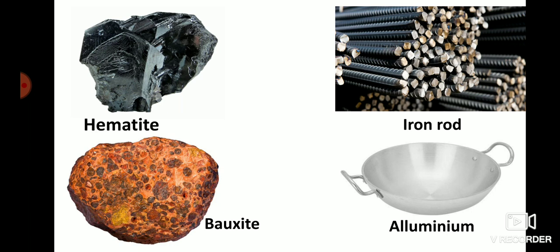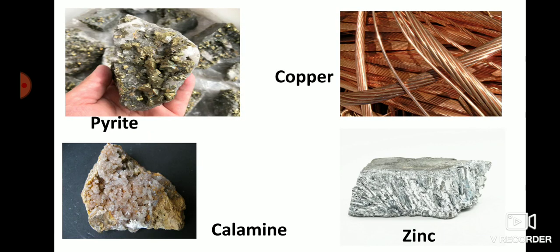There are many ore mines in our country from which metals are extracted. In the Chotanakpur region, there are many mineral mines — iron, mica, and bauxite minerals are found there. You can also see the picture of pyrite, the ore of copper, which is used for extracting copper. You can see the texture and color of pyrite and copper.